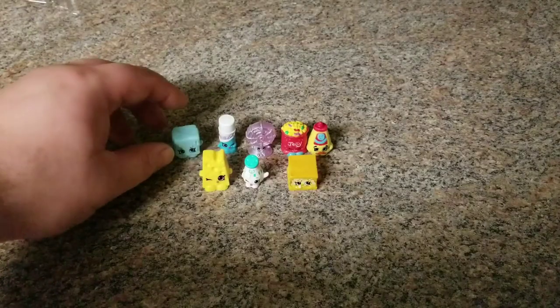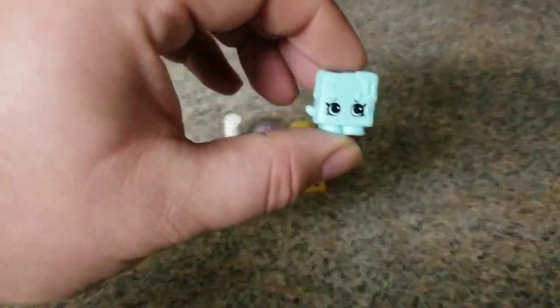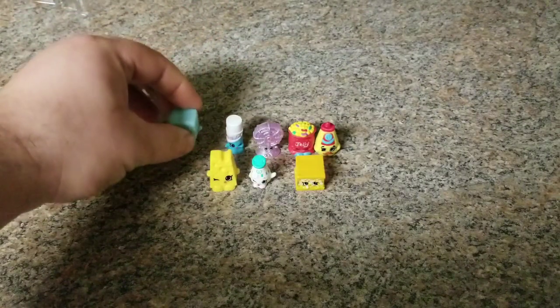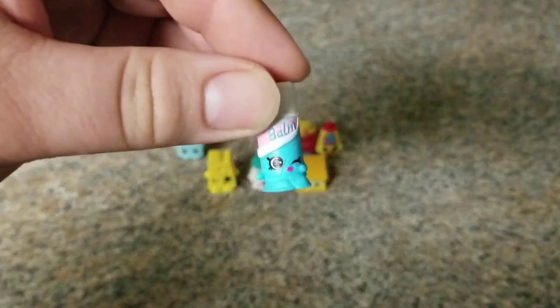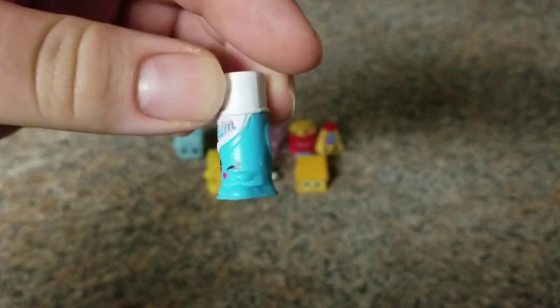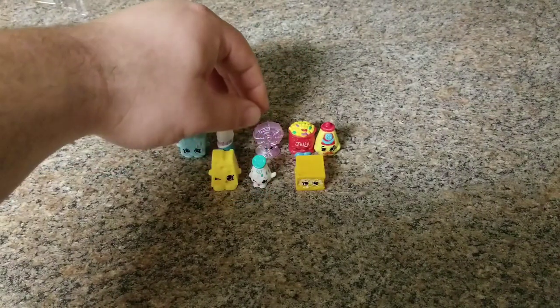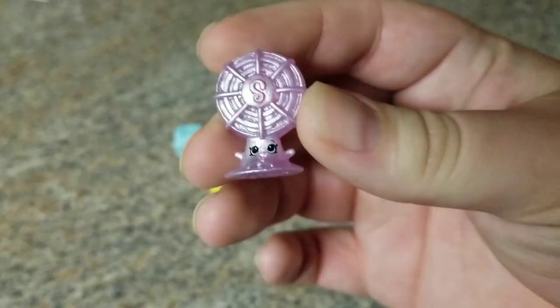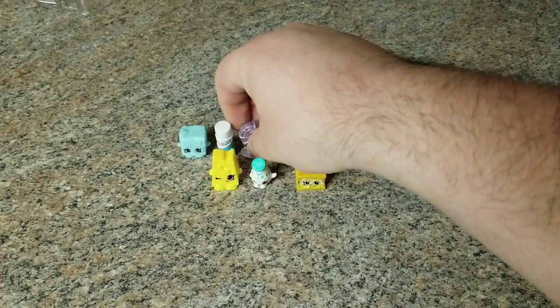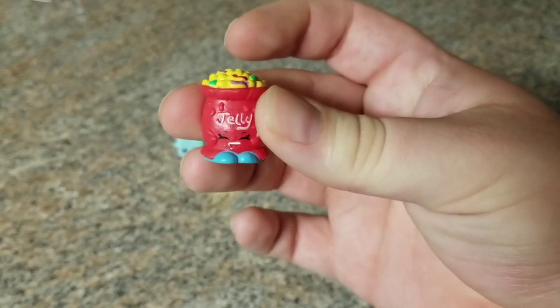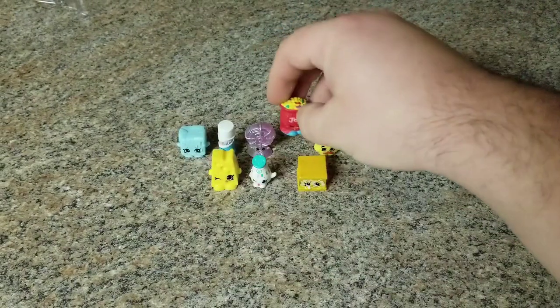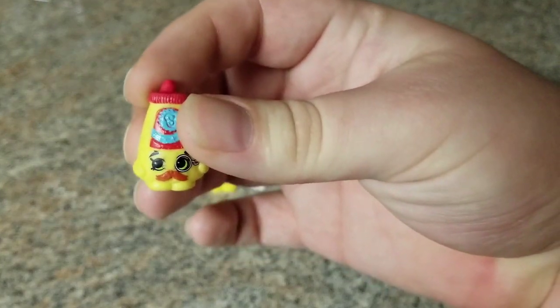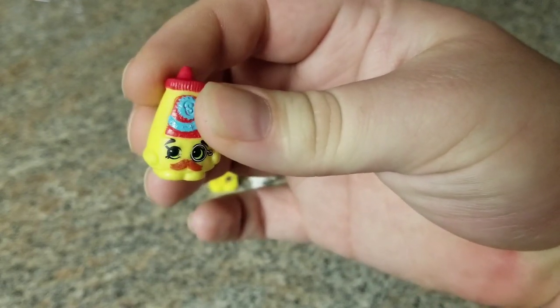Alright, so what we have here: we have, this one's name is Cool Cube, it's a common Shopkin. That's what we got this package. Next, we got Chap Ellie. This is Chap Ellie, she's another common. Blow-an, Blow-an is the fan, and she is a special edition. We got Jelly B, Jelly B is a common. And this one is Cornell Mustard, and he's a rare. Cornell Mustard is a rare, so we got a rare there, whoo!